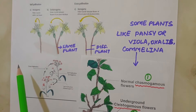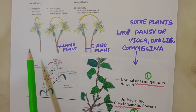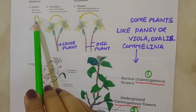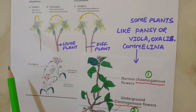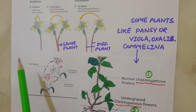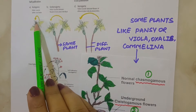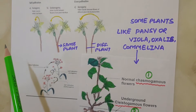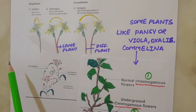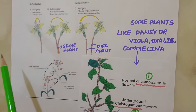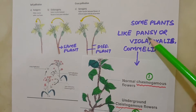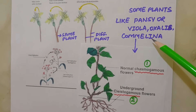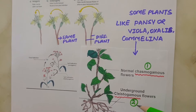Autogamy in such flowers requires two important conditions. First is synchrony in pollen release and stigma receptivity, and the second is that anther and stigma should lie close to each other so that self-pollination can occur. Some plants such as Viola, common pansy, Oxalis and Commelina produce two types of flowers.